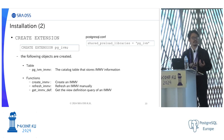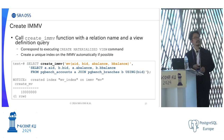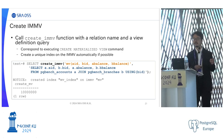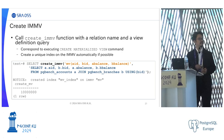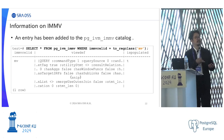PGIVM includes a catalog table that stores IMMV information, and functions for creating a view, refreshing a view manually, or getting the view definition. To create an IMMV, call the create_immv function with the view name, column list, and view definition as a string. This function corresponds to executing a CREATE MATERIALIZED VIEW command, and it also automatically creates a unique index on the view if possible. As a result, the view is created and an entry for IMMV information is added to the pg_ivm_immv catalog, including a view ID, view definition, and an is_populated flag indicating whether the view has data.